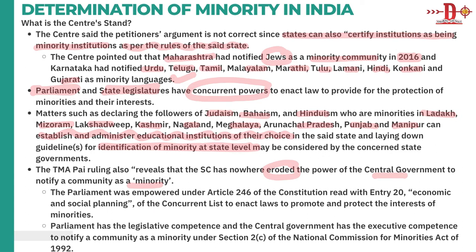Parliament was empowered under Article 246 of the Constitution. Under Entry 20 of the Concurrent List, which covers economic and social planning, Parliament has the power to enact laws to promote and protect the interests of minorities. The central government has executive competence to notify a community as a minority under Section 2C of the National Commission for Minorities Act 1992.